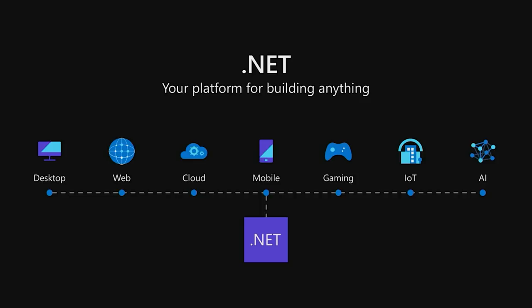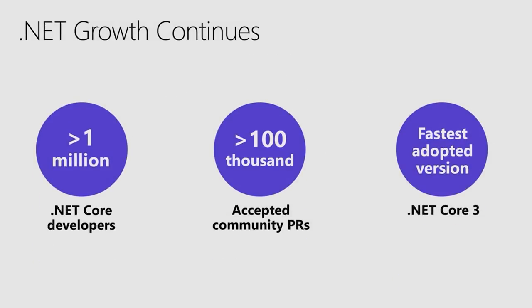Why use .NET? .NET is your platform for building anything that can run anywhere — from desktop to gaming, mobile, and the cloud. It's a mature, general-purpose programming platform built to be fast and secure. It comes with innovative languages, tools, and frameworks. Millions of developers use .NET, and .NET Core now has over 1 million active developers every month, with over 100,000 pull requests accepted from the community.